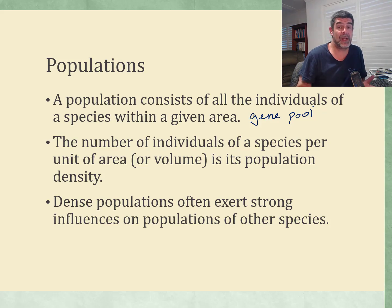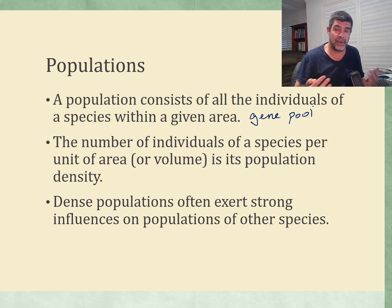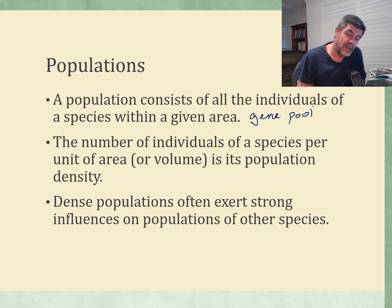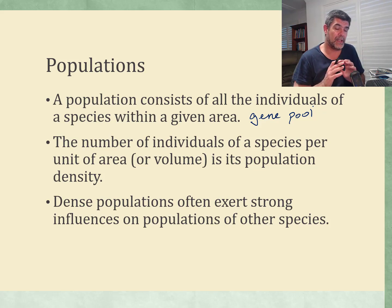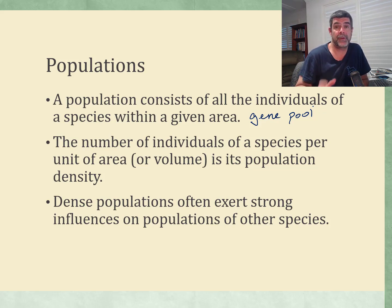Any changes or shifts that can occur either at a micro or macro evolutionary scale are going to happen because of that availability of genes. And obviously, if populations start to shrink, then the availability — or the diversity — within that gene pool starts to diminish, and that does put pressure on the species as a whole.